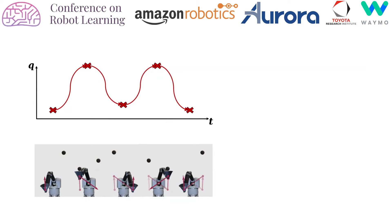We use the four positions described before as via points to define a movement primitive using cubic interpolation. Note that position 1 is used twice to close the cycle. To reduce the number of parameters, we set all via point velocities to zero and apply symmetry constraints. This allows us to achieve a policy representation that, in comparison to popular neural network architectures, is very compact and sufficiently expressive at the same time.